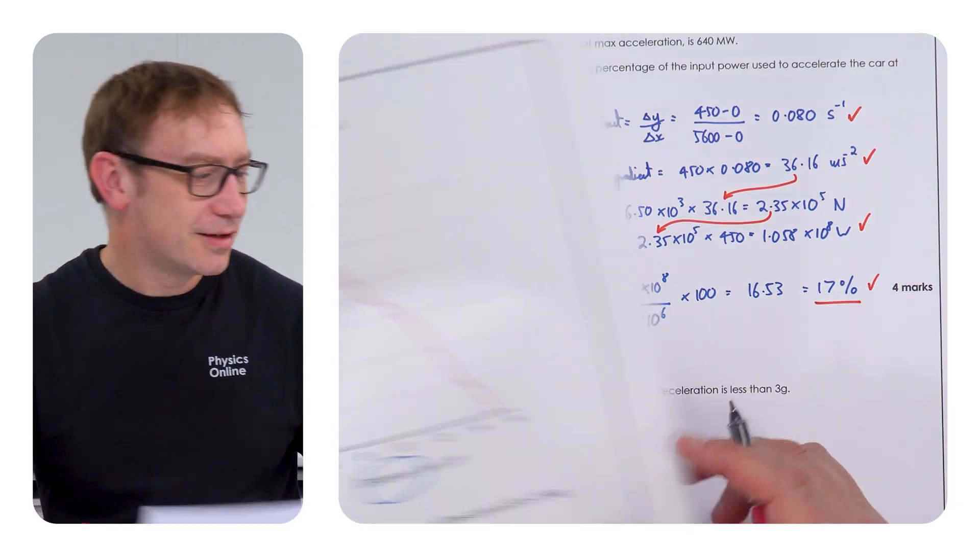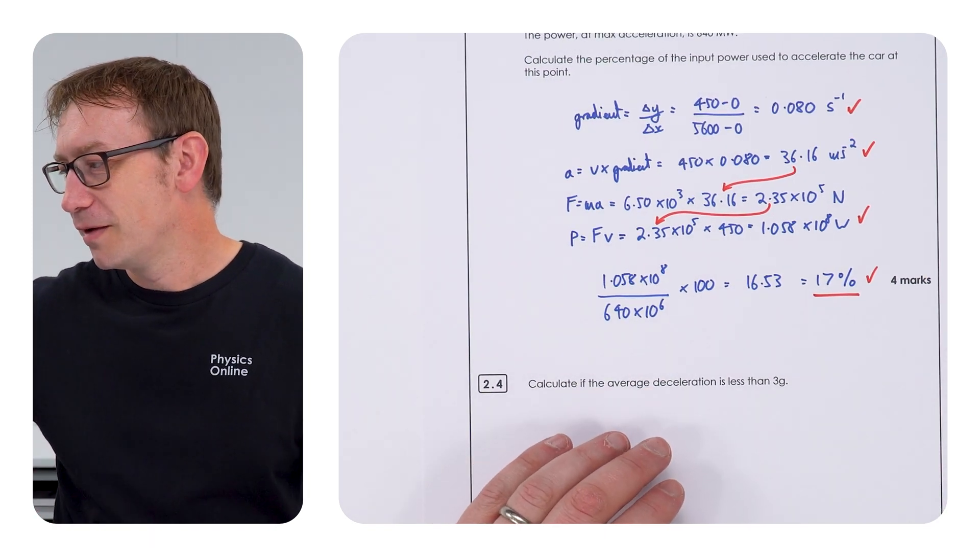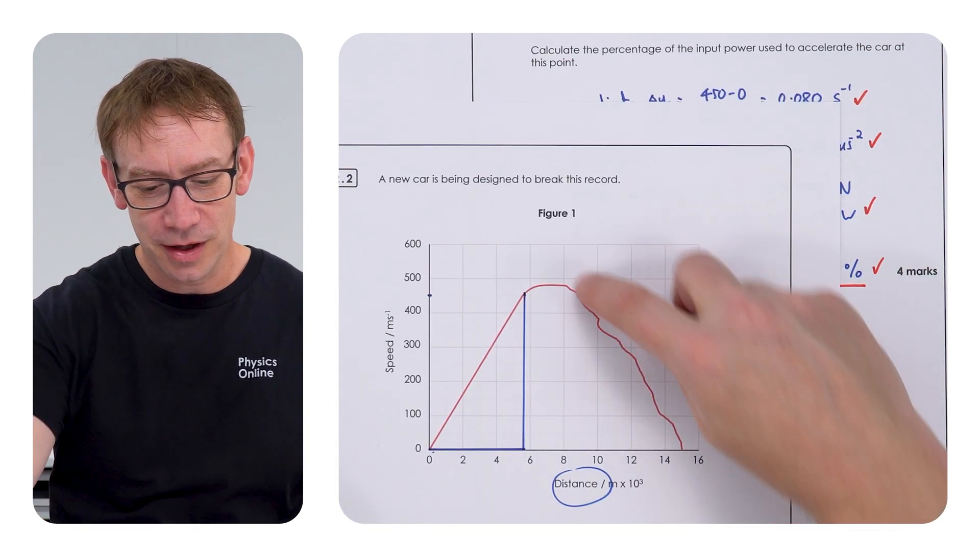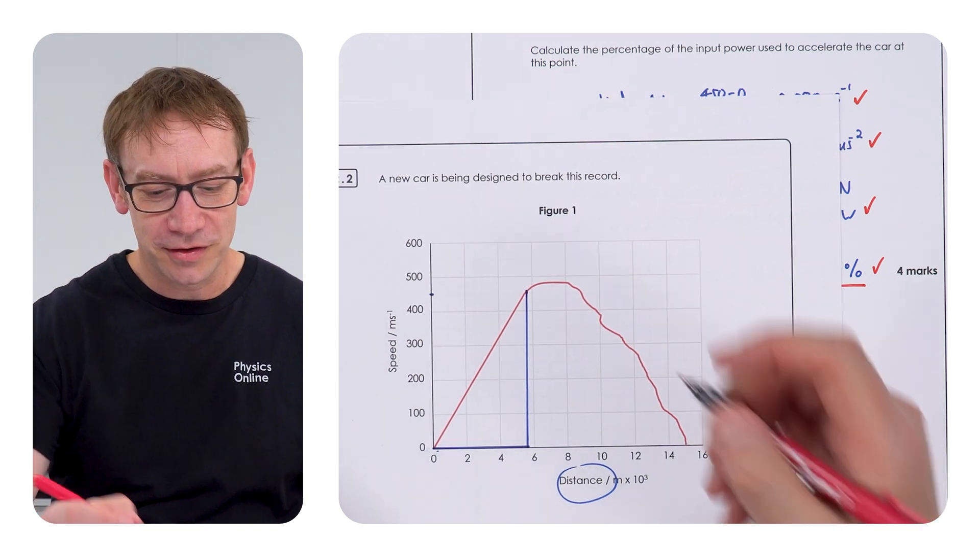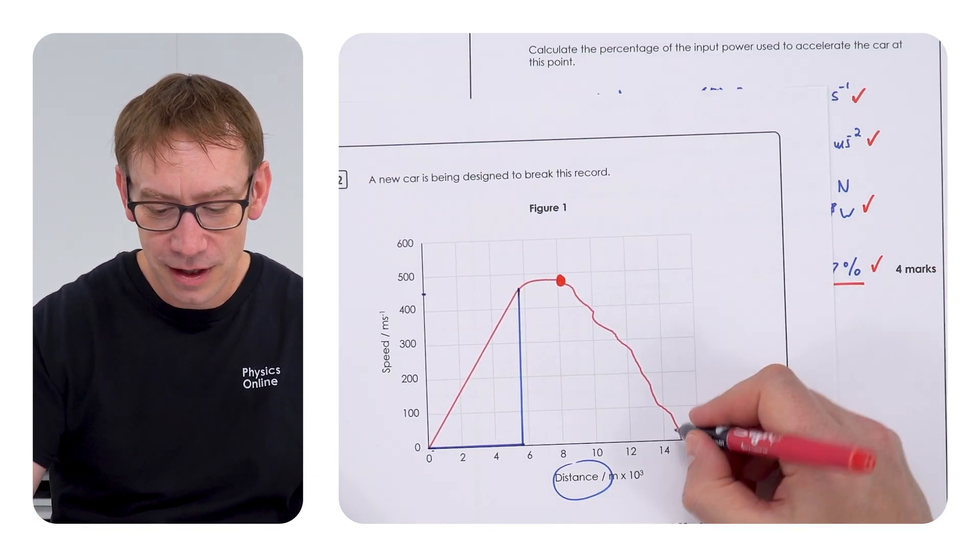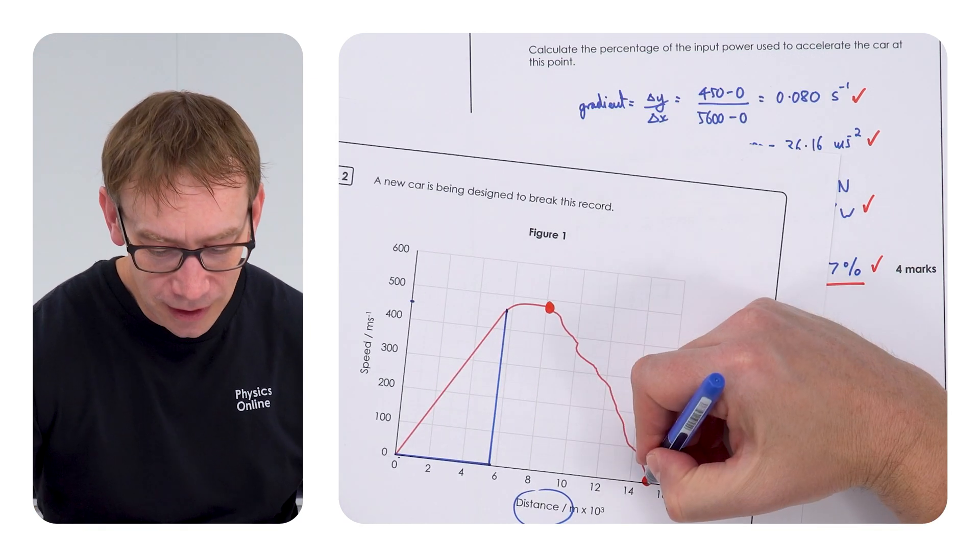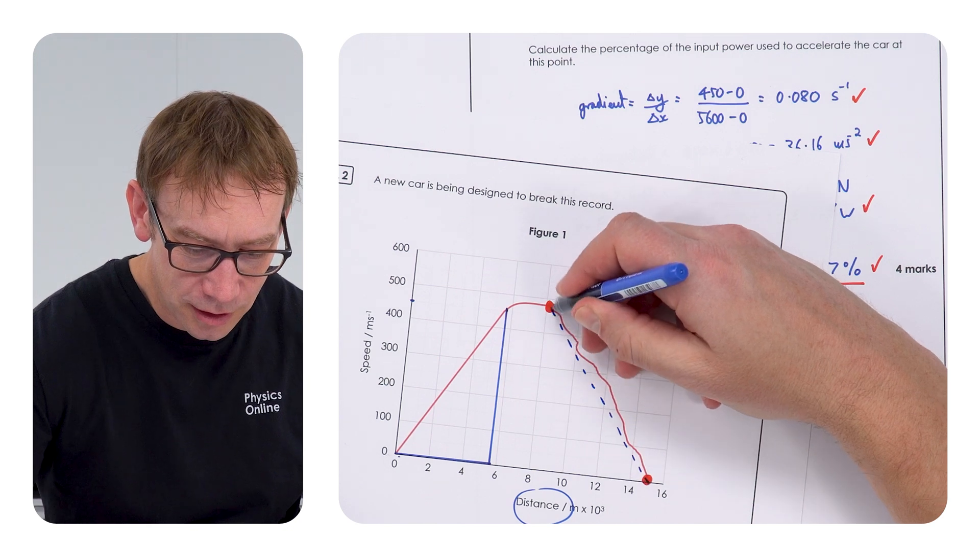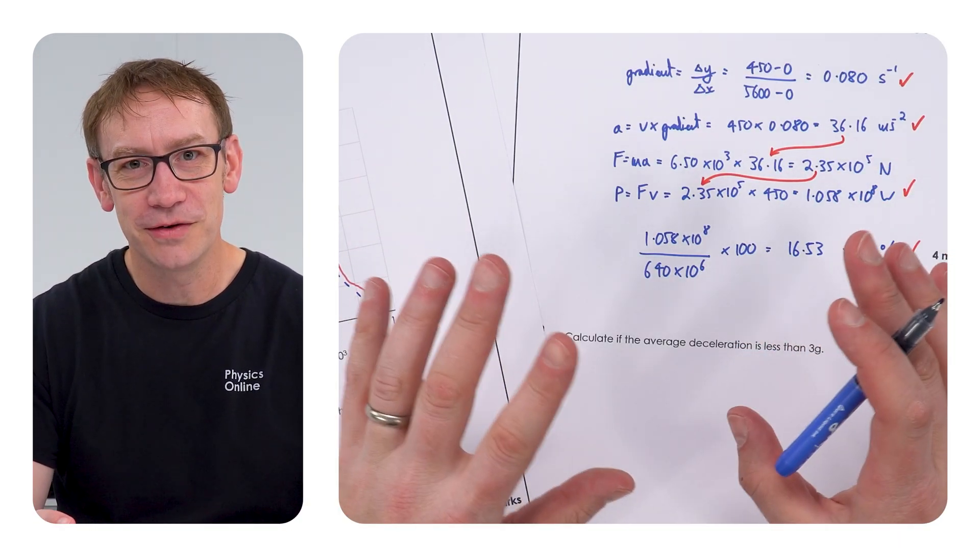The final bit, again, just looking at what the examiner's report said, it said that only about one in six students, that's 13% of you, actually managed to get two marks. Calculate if the average deceleration is less than 3g. So, for this, we're going to be looking at the second part of the graph as the speed of that object decreases. Now, my approach to this is to think about, well, here's the starting point up here, and here's the end point. And we want to look at the average between those two values. So, effectively, think about what that kind of straight line might look like. And now, we simply have a SUVAT equation. So, this is easy. If you've got a SUVAT, a motion kind of question, we're going to write down SUVAT.